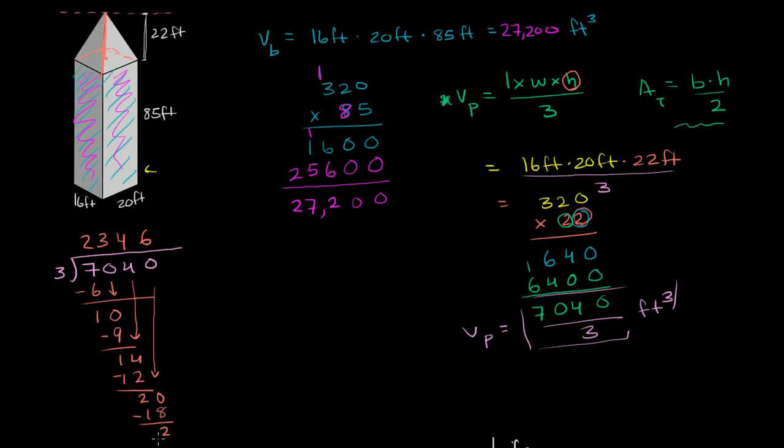We could keep going and have a decimal. Or we can just write that the volume of the prism is 2,346, and 2 with the remainder. So 2 and 2 thirds and 2 thirds feet and 2 thirds. If we kept dividing, we would get 0.66666 and we would just keep on repeating forever.